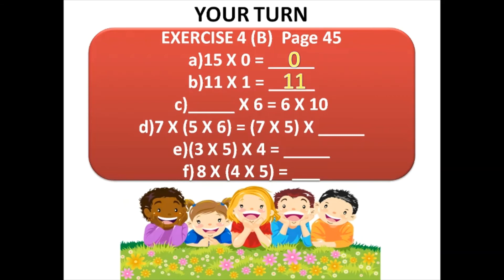Dash times six equals six times ten. Here the order of the number is changed, so six times ten will be equal to ten times six. For part D: seven times five times six is the same as seven times five times six — the grouping property applies.